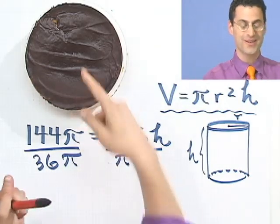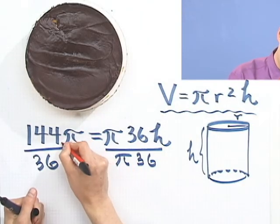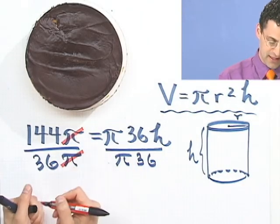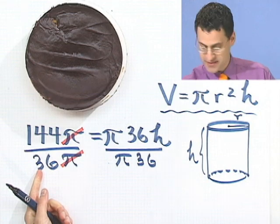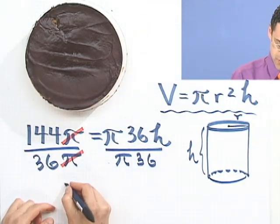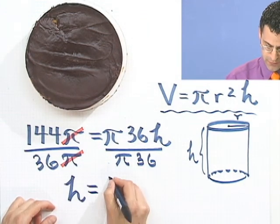No joke about my Boston cream pie, please. And then, in fact, I can divide 36 into 144, and I'd see that h would be 4 inches.